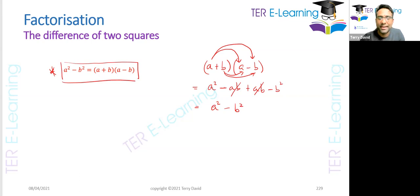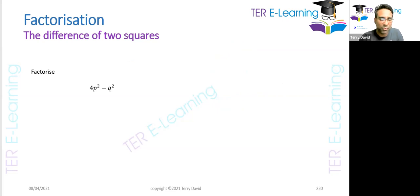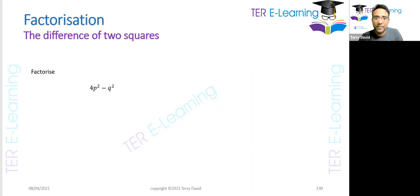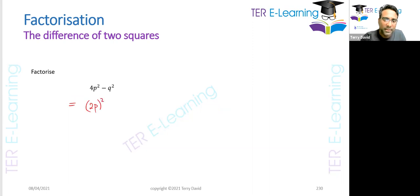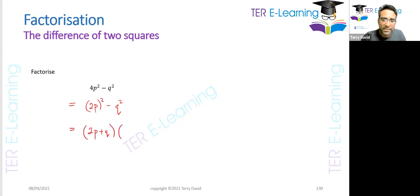In the exam, you have to be able to identify when to use this method. I'm going to do several questions so you can see how to identify when to use the difference of two squares. Look at this: 4p squared minus q squared. We have two terms separated by a minus sign. I can write 4p squared as (2p) squared, minus q squared — now it looks like a difference of two squares. So when I factorize this, I get (2p plus q)(2p minus q).